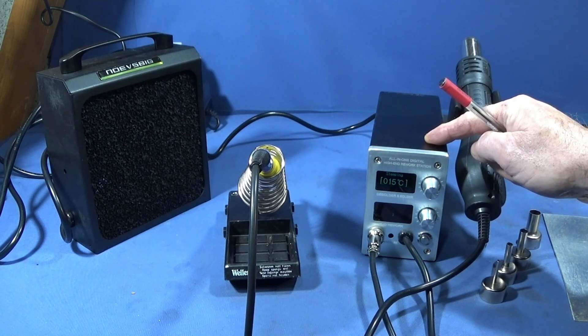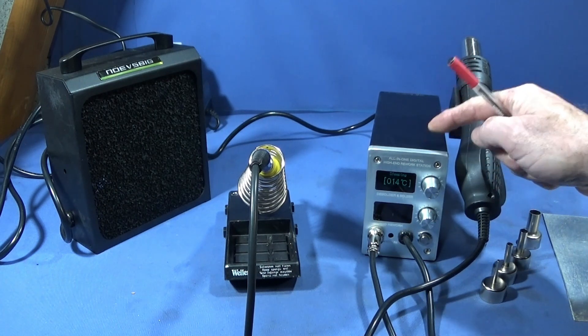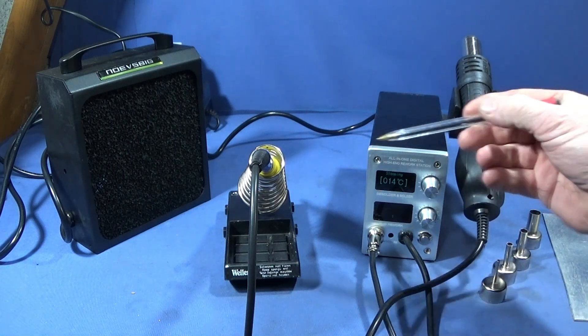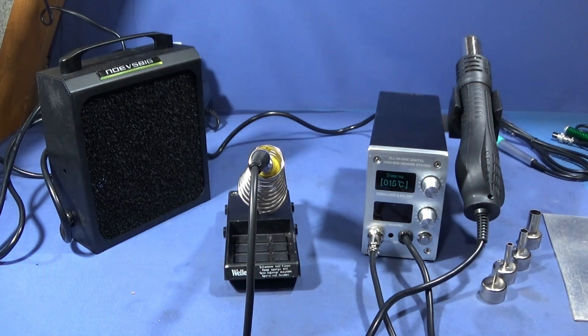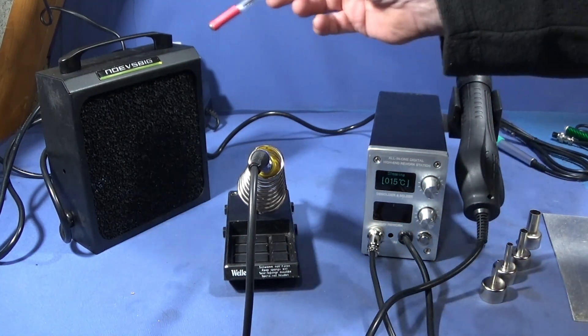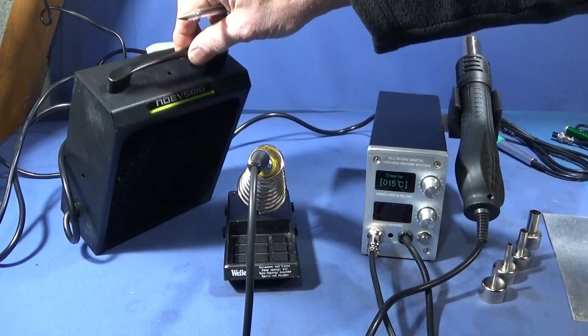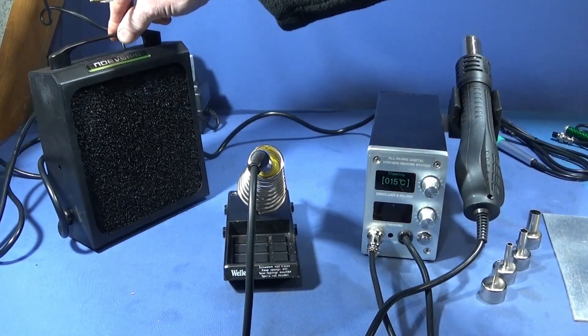This is the STM32 T12, a combined unit with a hot air gun and soldering iron all in one system. To go with this soldering station I've bought this one here which is a really high quality extractor type bench top fan made by Noevs Big.